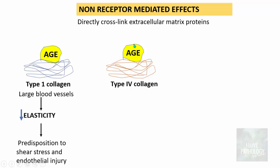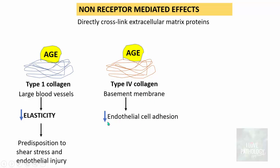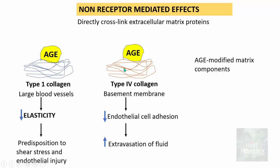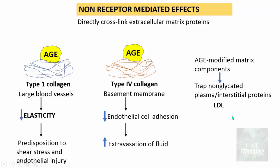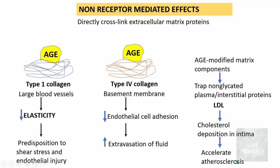Similarly, when AGEs cross-link type 4 collagen — a constituent of basement membrane — this results in decreased endothelial cell adhesion and increased extravasation of fluid. These cross-linked extracellular matrix proteins are referred to as AGE-modified matrix components. AGEs also trap non-glycated plasma proteins such as LDL. When LDL is trapped, cholesterol deposition occurs in the tunica intima, resulting in acceleration of atherosclerosis — which is why diabetics are more prone to accelerated atherosclerosis.